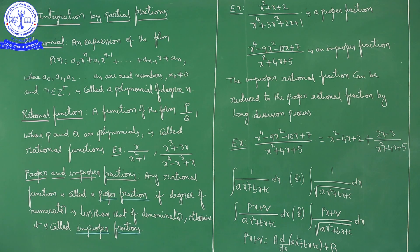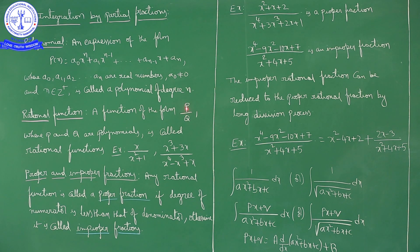The next definition: a rational function. A function of the form P/Q, where both the numerator P and the denominator Q are polynomials, is called a rational function. For example, a linear polynomial over a quadratic polynomial is a rational function.